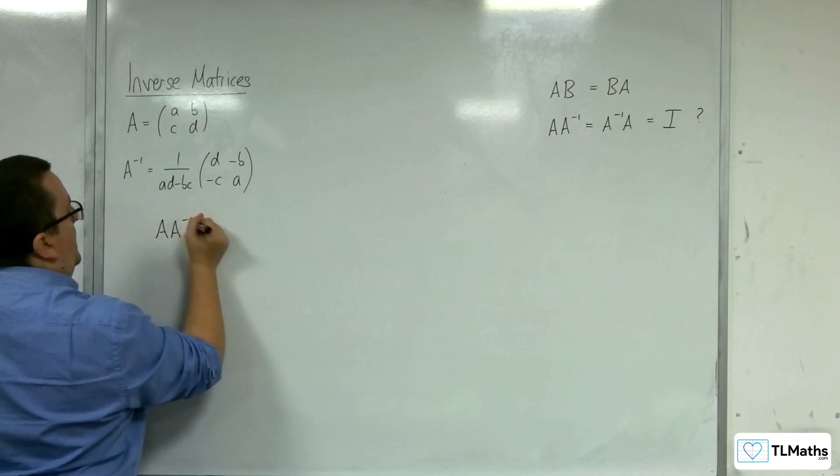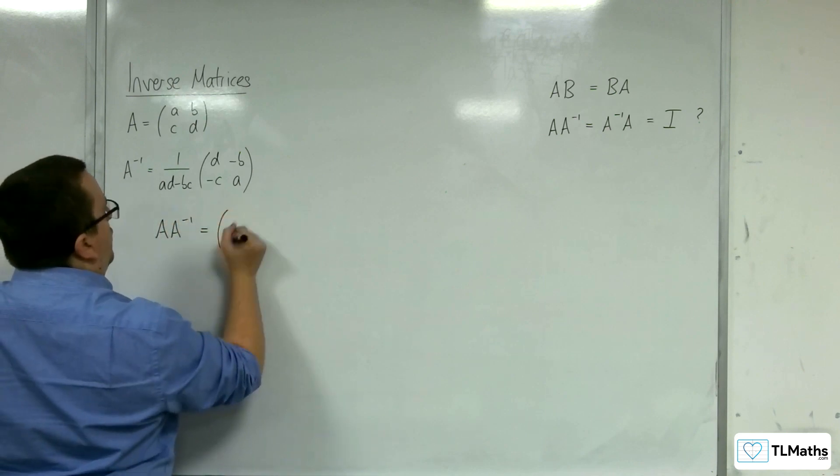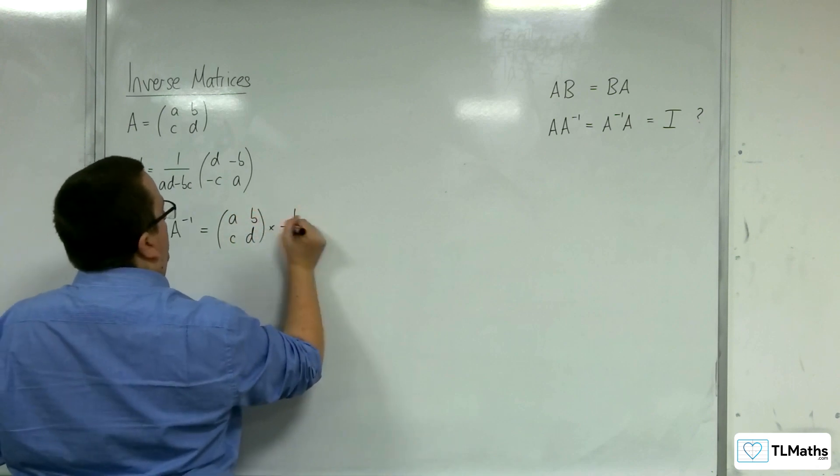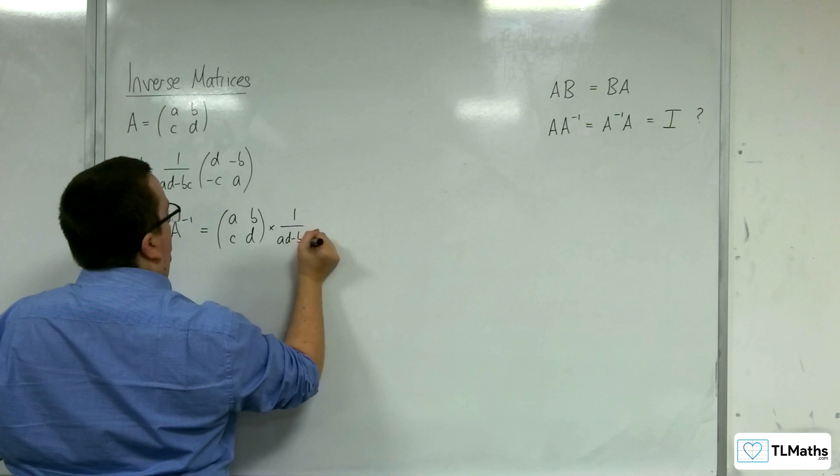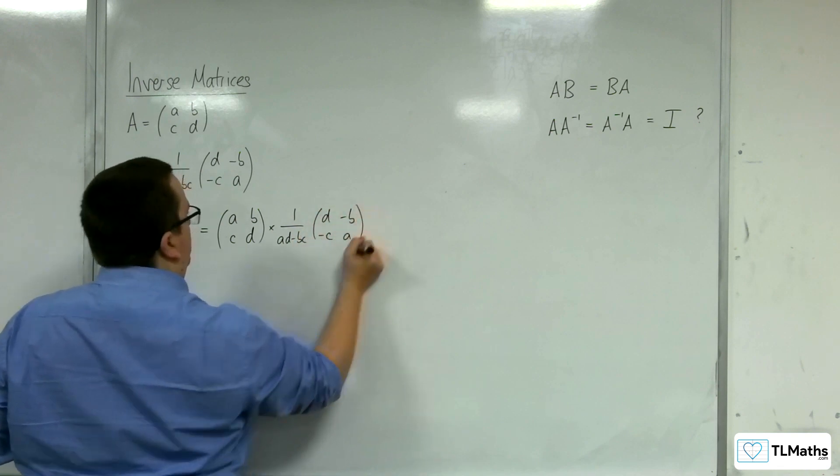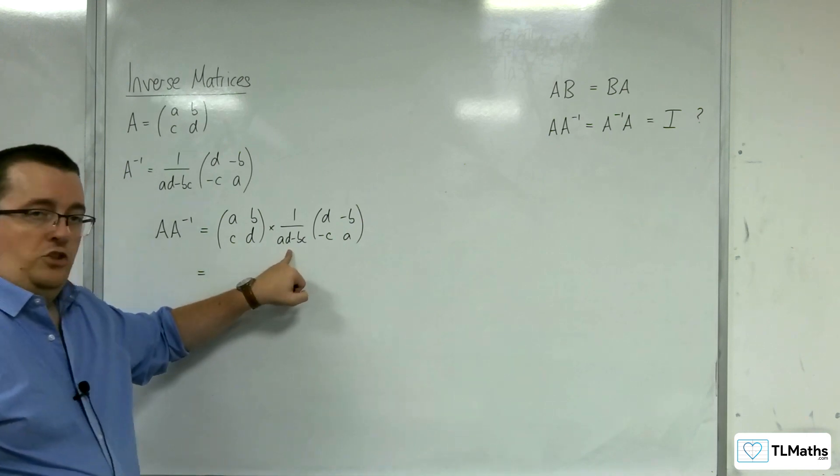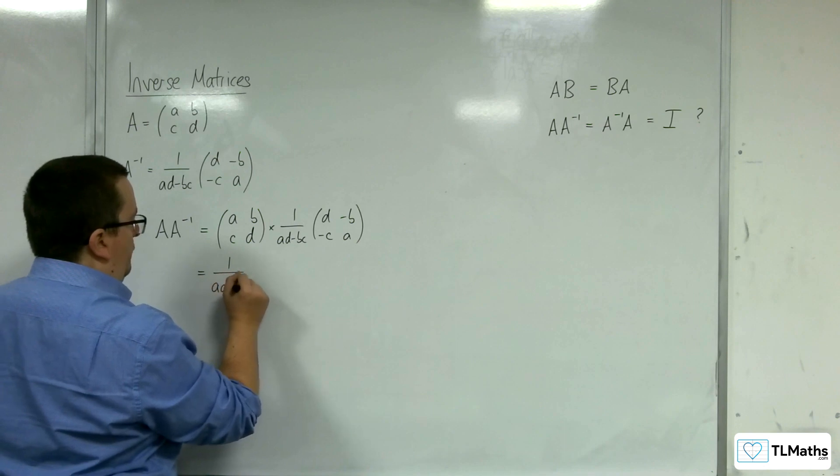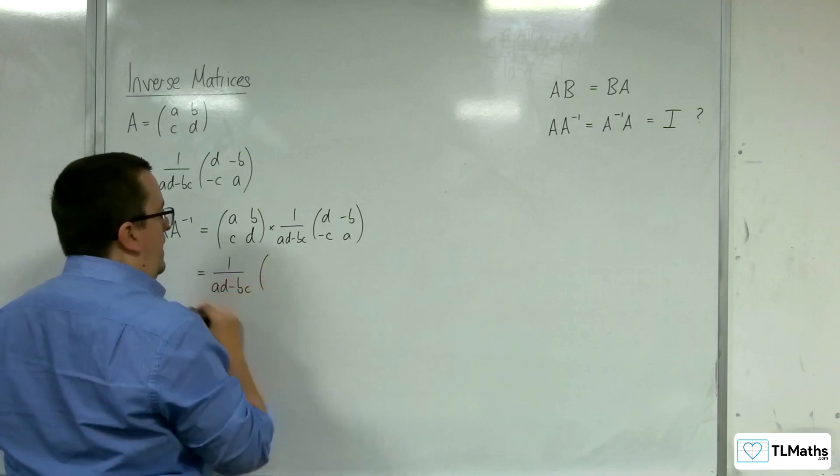So I'm going to do AA^-1 to start off with. So I've got A, B, C, D being multiplied by this 1 over AD - BC, D, -B, -C, A. Now, this is just a constant term, so I can bring that out the front. That's not going to make any difference if I bring it out to the front.